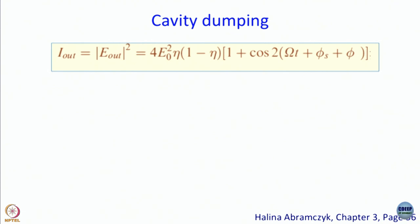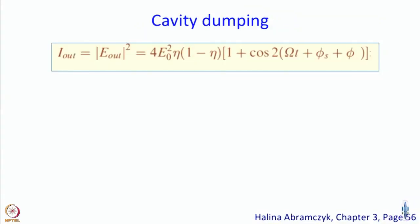I have said it three or four times already, but it is important as you will see. This is the expression for the intensity of the output. What you see is that this output is modulated by a frequency that is double the frequency of the sound wave used. The phi's are just phase differences, but the frequency is given by 2Ω — it is modulated at 2 capital omega.